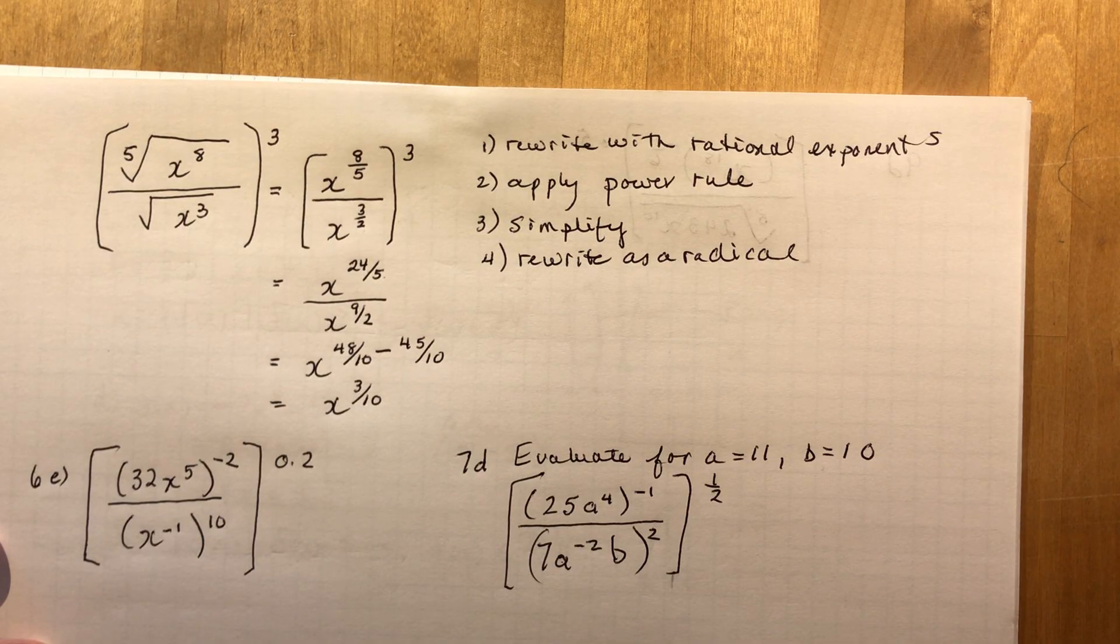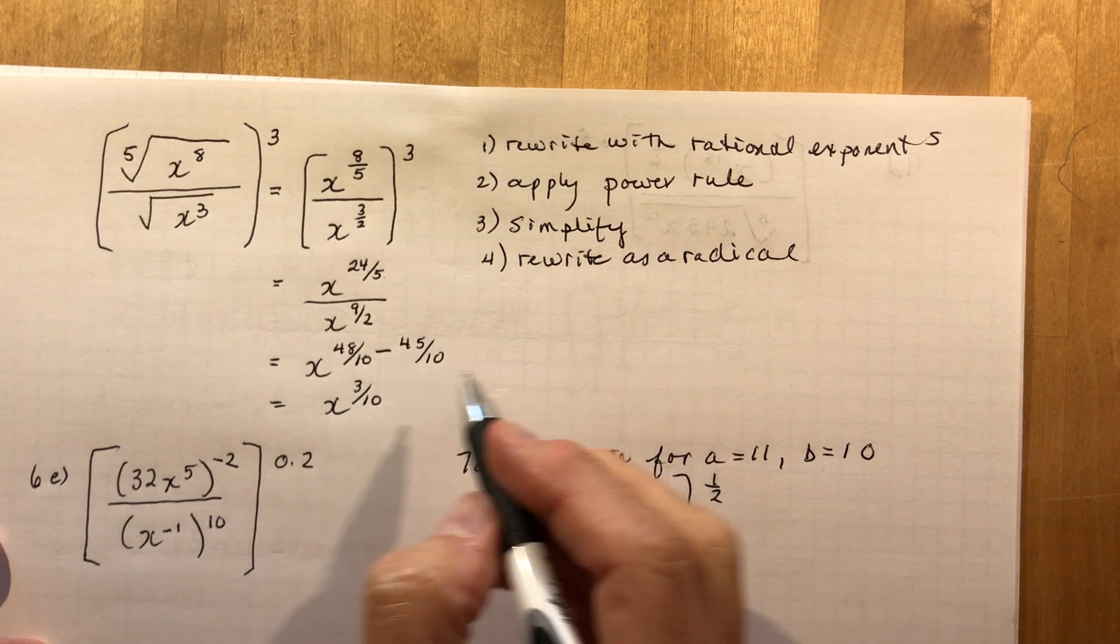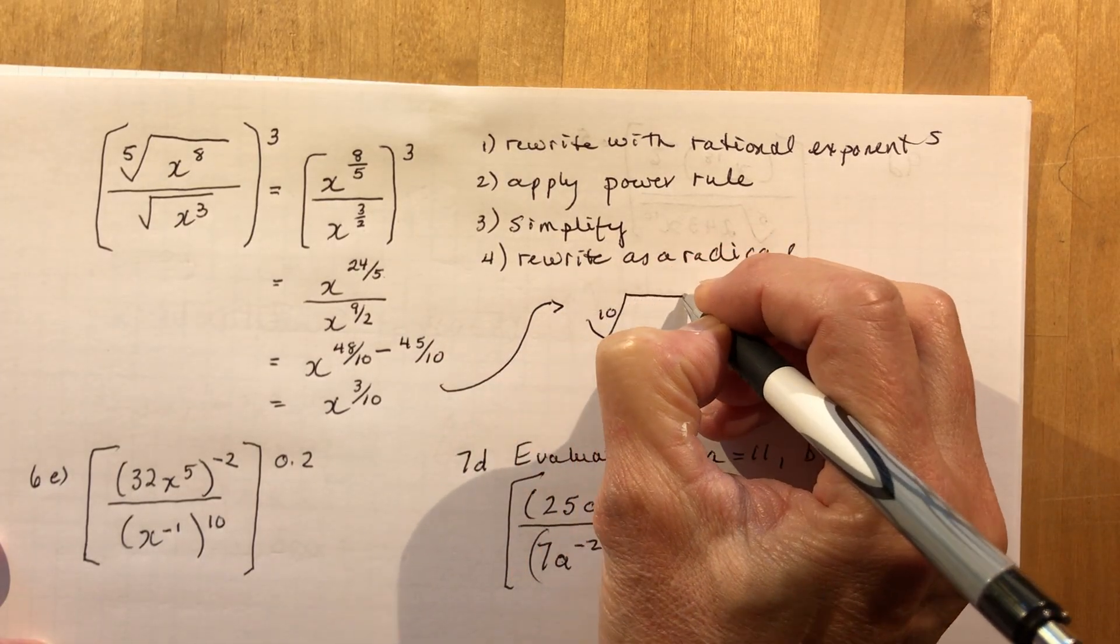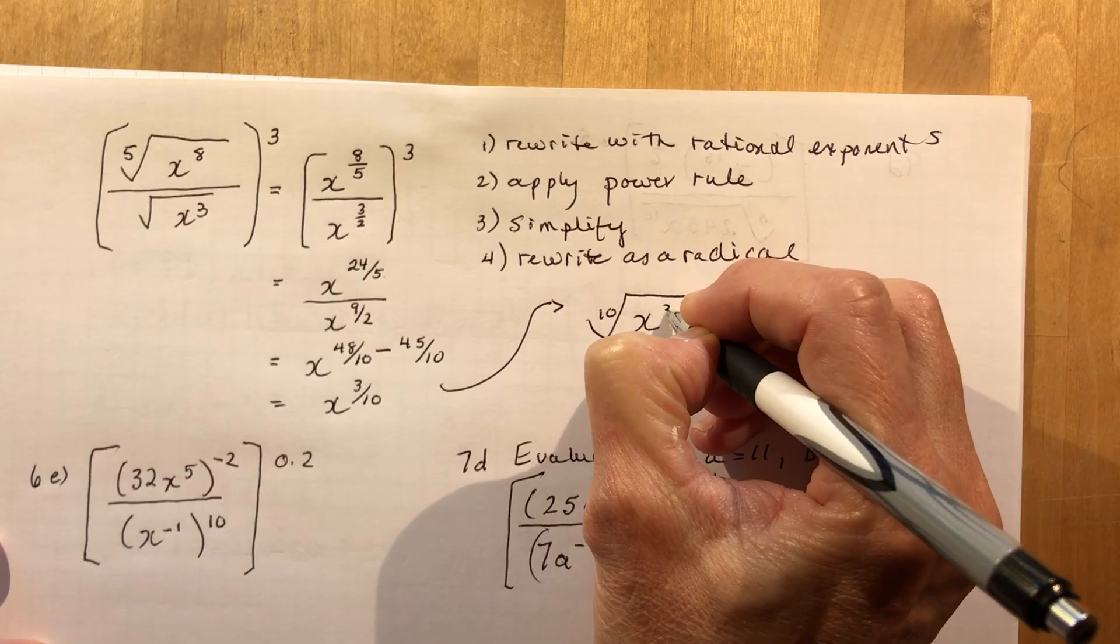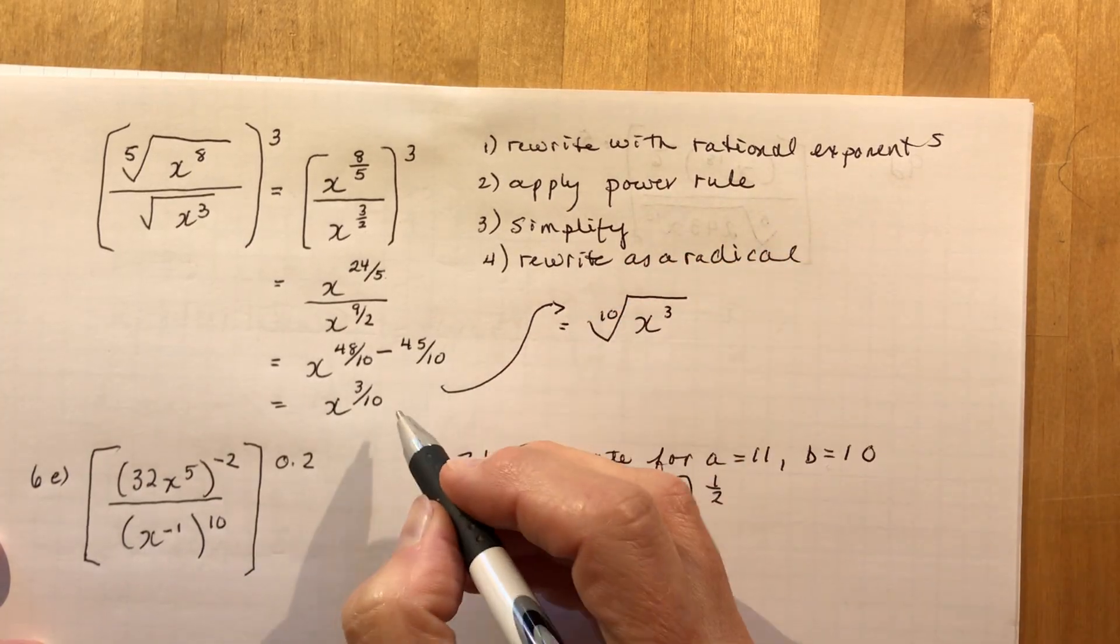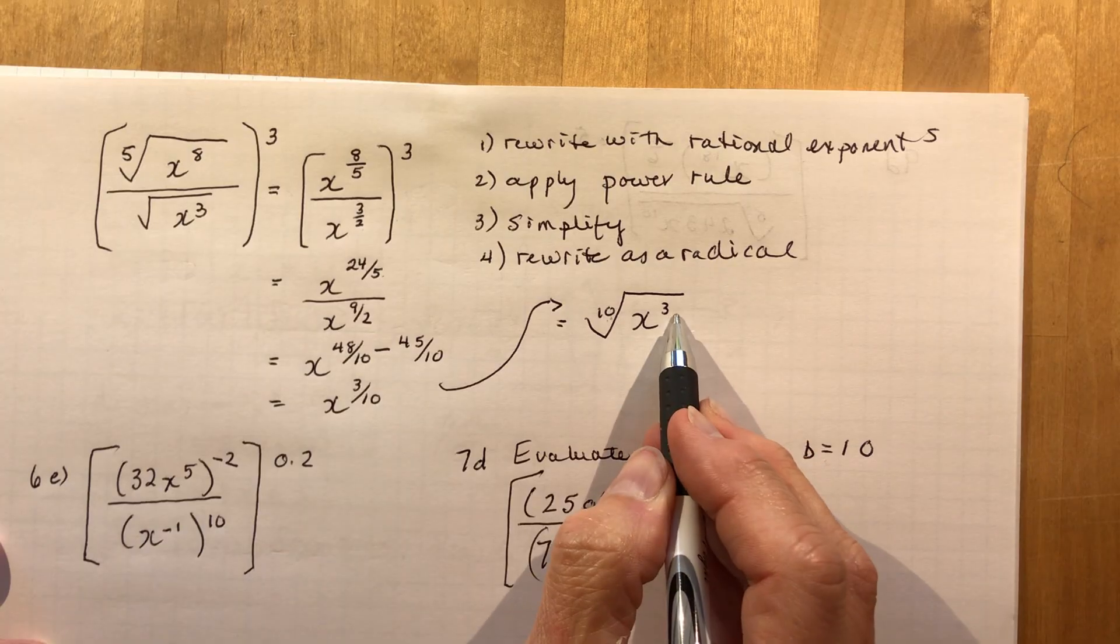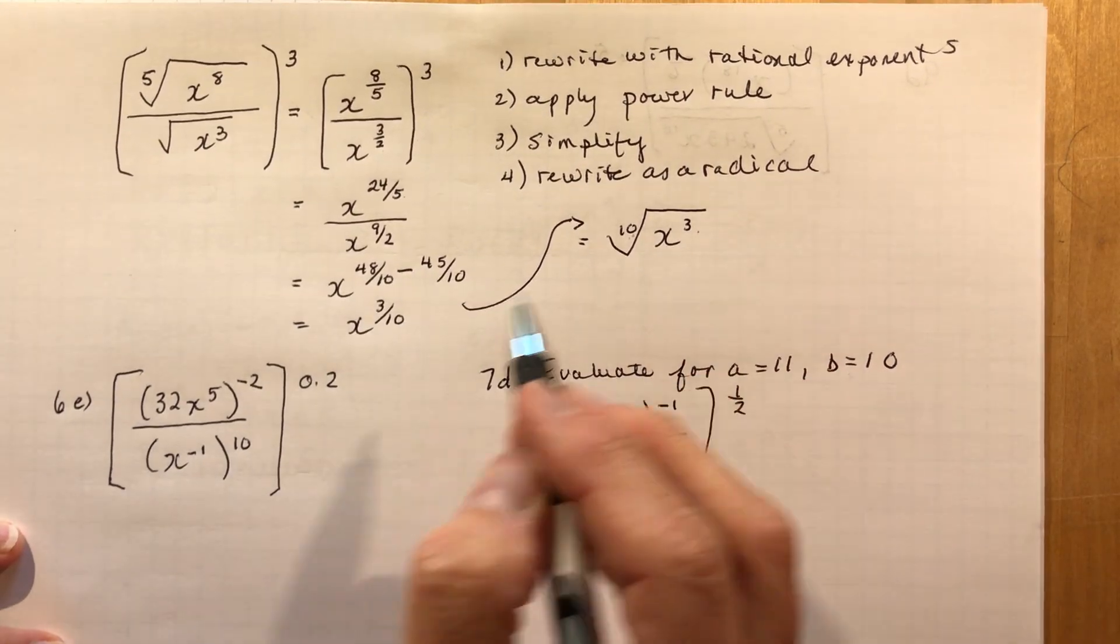So you can see how if you simplify carefully, work from the inside out, you don't really have too much trouble. And again, if you want to write that as a radical, this would be the tenth root of x cubed. Right? Remember, the denominator is the root you're taking and this is the exponent. Okay, a couple more.